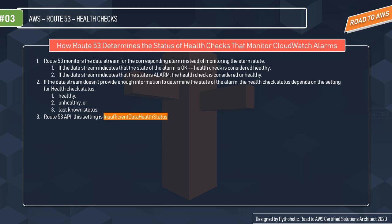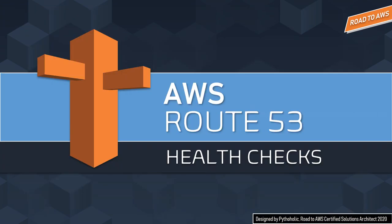Route 53 monitors the data stream for the corresponding alarm rather than the alarm state itself. If the data stream indicates the alarm state is OK, the health check is considered healthy. If the data stream indicates the state is alarm, the health check is considered unhealthy. If there isn't enough information to determine the alarm state, the health check status depends on the setting for the variable `insufficientDataHealthStatus`, which can be set to healthy, unhealthy, or last known status. That covers Route 53 health checks — please leave any questions in the comments below.